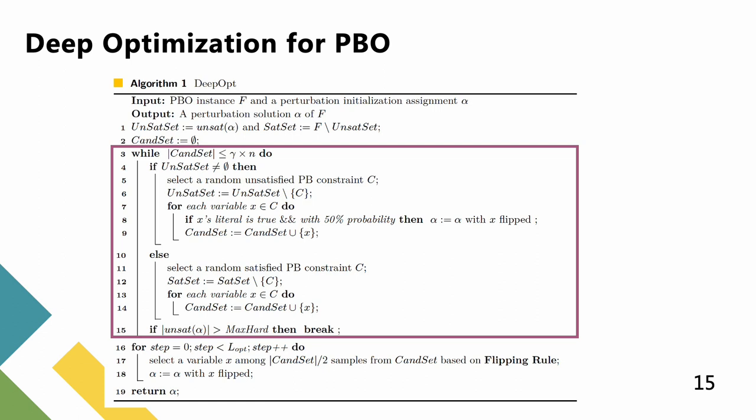If the algorithm selects a random satisfied constraint C, the algorithm only adds all variables of C into candidate set.